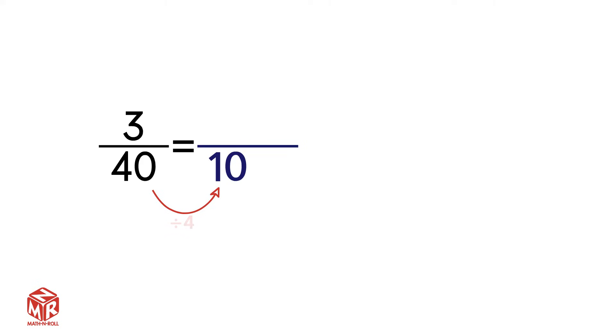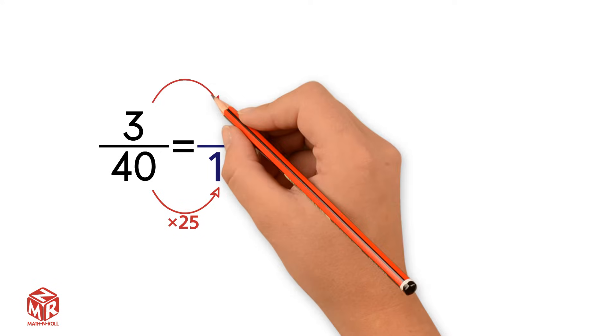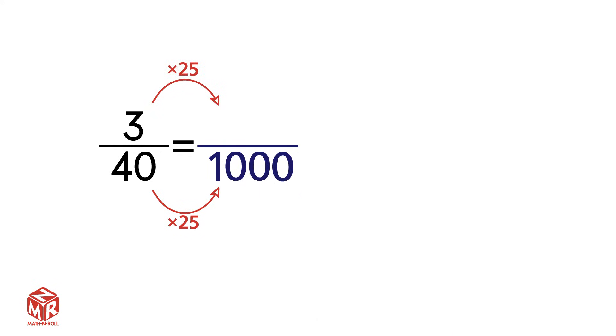So let's keep looking. Can the equivalent fraction have a denominator of 100? No, because we can't multiply 40 by a whole number to get 100. Let's try 1000. 40 times 25 equals 1000. So 1000 does work as a denominator. We also have to multiply the numerator by the same number.